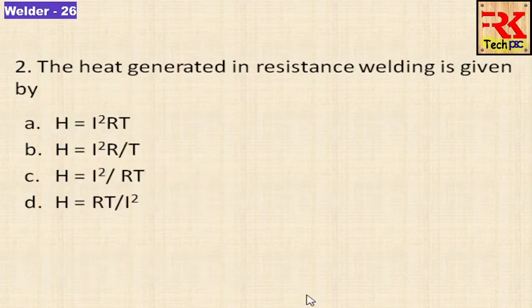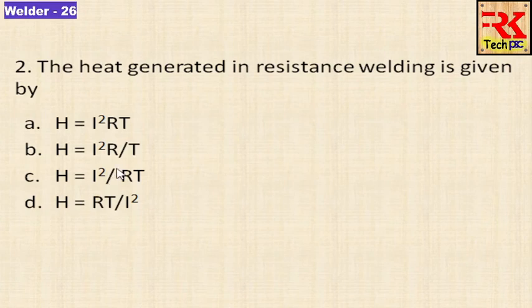The heat generated in resistance welding is given by which formula? Options are: H equals I squared RT, H equals I squared R divided by T, H equals I squared divided by RT, or H equals RT divided by I squared.